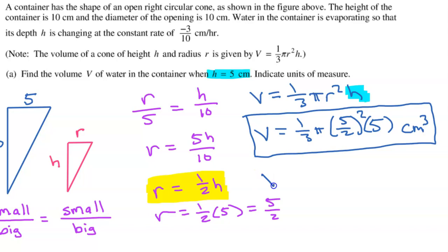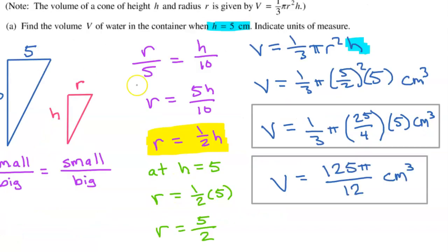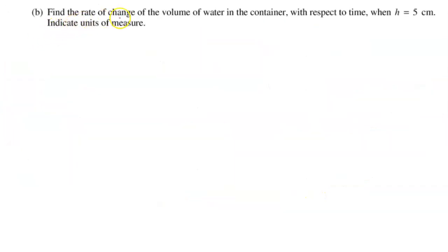We will go ahead and simplify it just for fun, but we don't have to. Part B says find the rate of change of the volume of water in the container with respect to time when h is equal to 5 centimeters. Indicate units of measure.